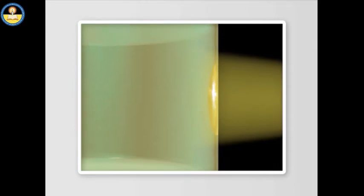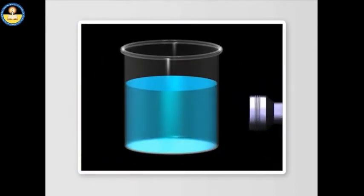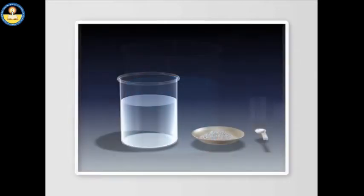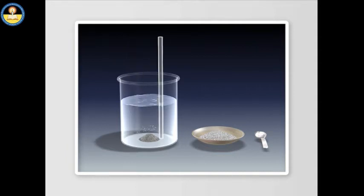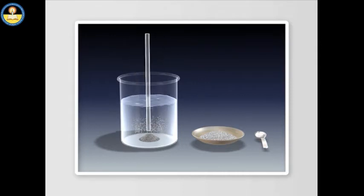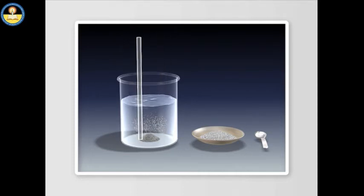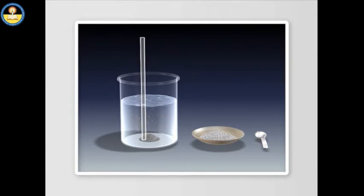This copper sulphate solution is an example of a homogeneous mixture and is termed a true solution. In Activity 2, we take some sand in a beaker, add 50 to 100 ml of water, stir thoroughly, and allow it to stand undisturbed for a few minutes. We observe that the sand does not dissolve in water but remains suspended in it. After a few minutes, sand settles down at the bottom of the container. This is a heterogeneous mixture, and such mixtures are called suspensions.